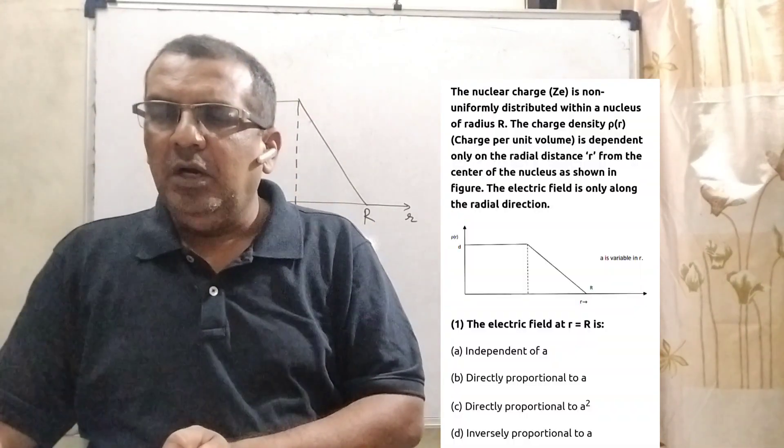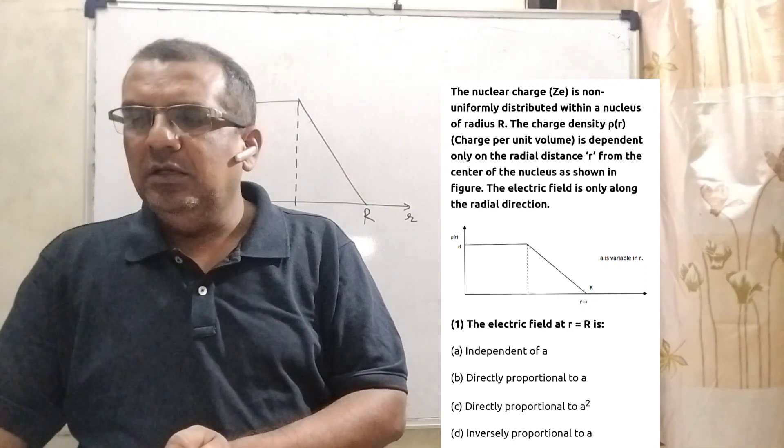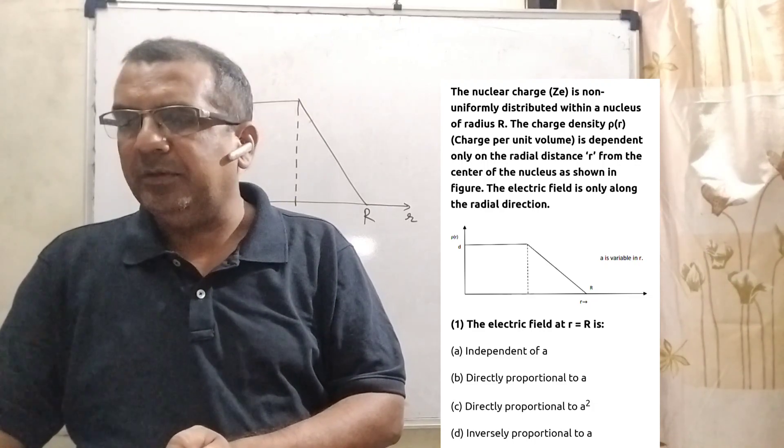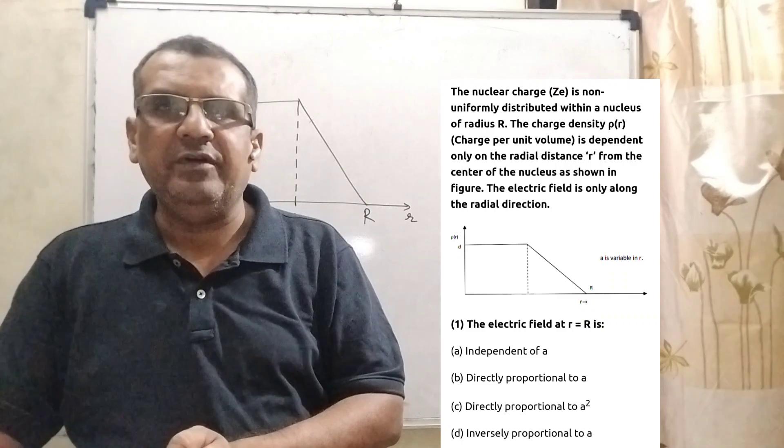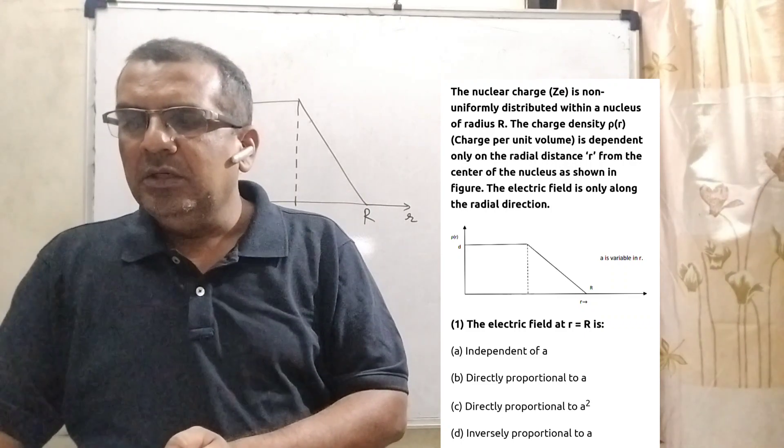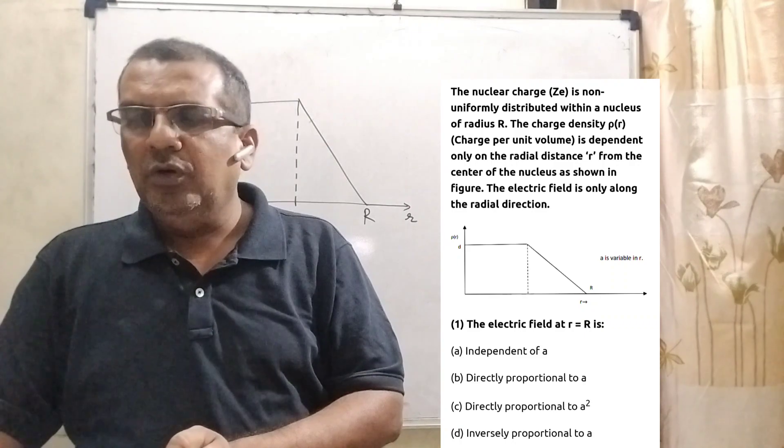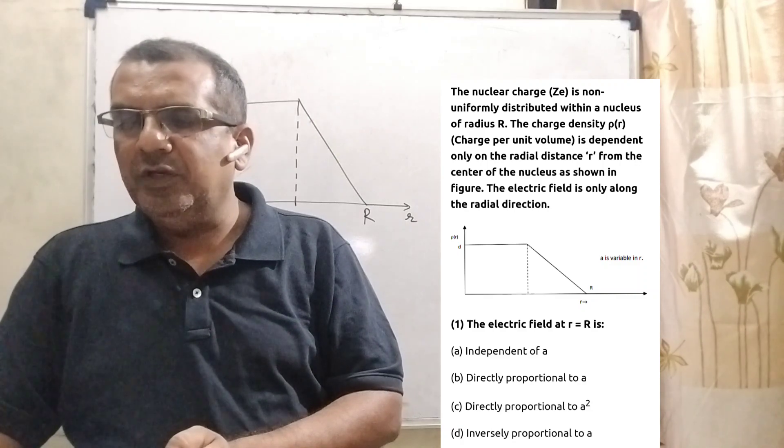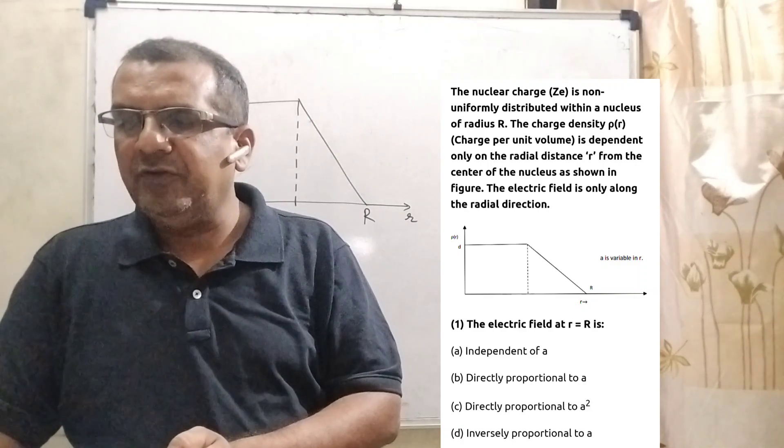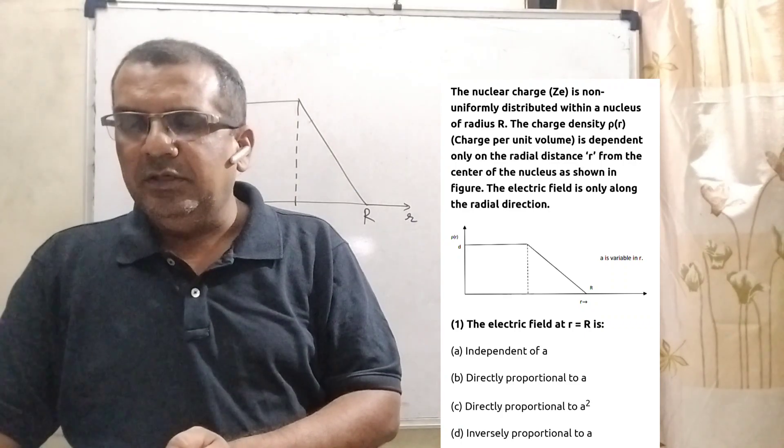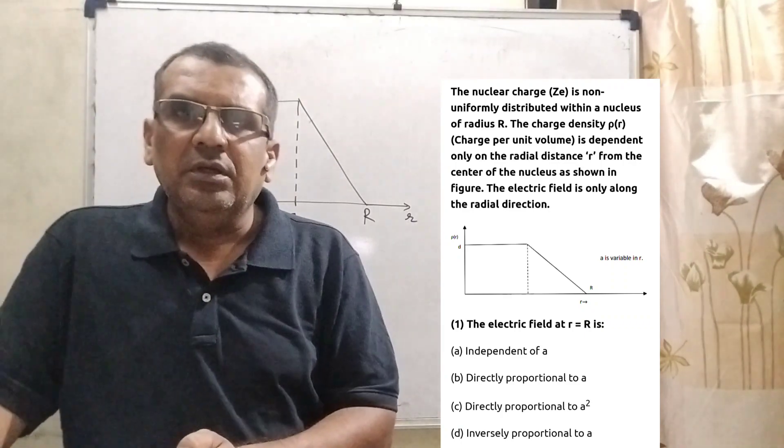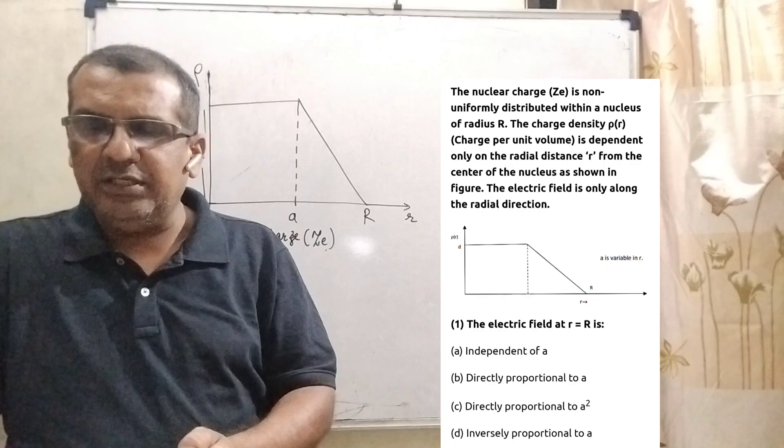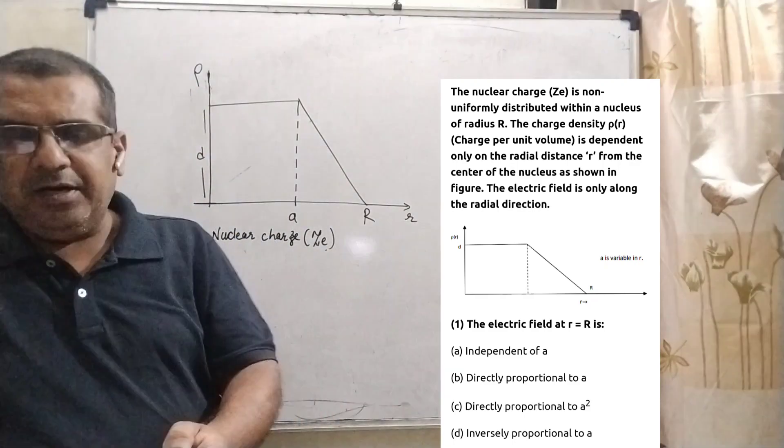Now here is the question. A nuclear charge ZE is non-uniformly distributed within a nucleus of radius capital R. The charge density rho is a function of R. Charge per unit volume is dependent only on the radial distance small r from the center of the nucleus, as shown in the figure. The electric field is only along the radial direction. Here, paragraph questions, and one by one we have to discuss.